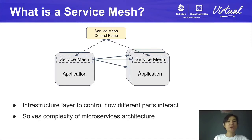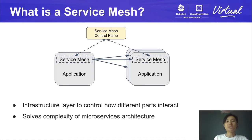Let's take a look at how service mesh solves this problem. Service mesh is an extra infrastructure layer added to the deployment to control how different parts of the system interact with each other. There will be one service mesh control plane that is responsible for all the configurations. The service mesh part deployed with the application will get the configuration from the control plane, decide where the traffic should go, and also do all the other features like security and observability.